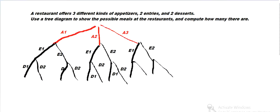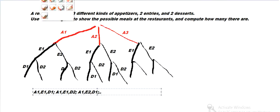And then we can just list out what the various meals are. We could have A1, E1, D1, or going down A1, E1, D2. Or we could have A1, E2, and then D1, and so on. So each of these bottom nodes represents a different meal we could have if we trace back upwards how we got there.